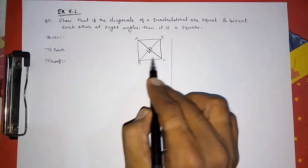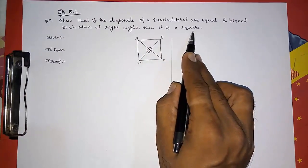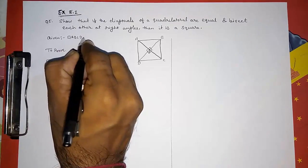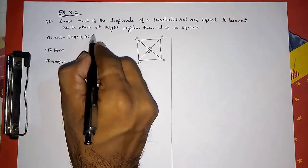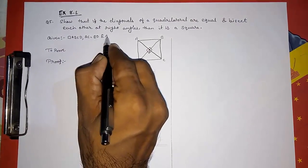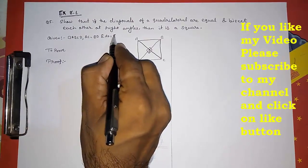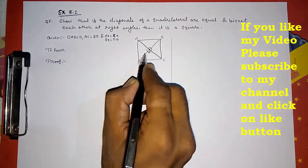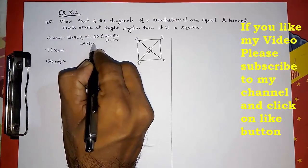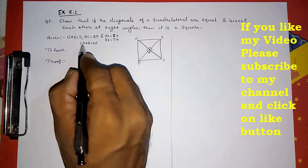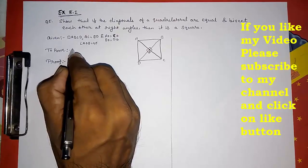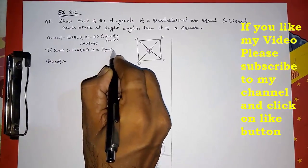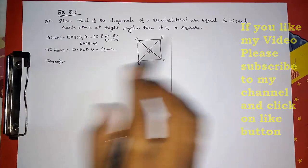For proving that it is a square, we need to prove that all sides are equal and all angles are 90 degrees. If we prove both of those conditions, we can say it is a square. So: Given quadrilateral ABCD where AC equals BD, AO equals CO, BO equals DO, and angle AOB equals 90 degrees. To prove: quadrilateral ABCD is a square.